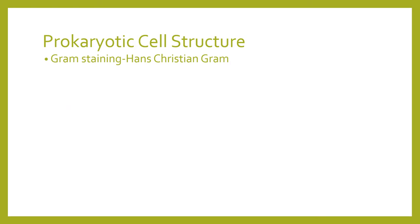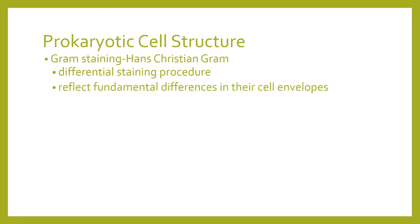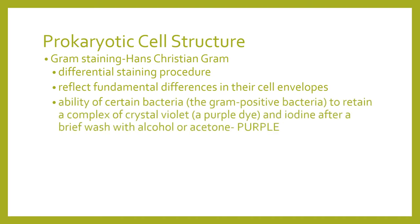There are several ways to identify organisms. One is gram staining, developed by Hans Christian Gram — a differential staining procedure that reflects fundamental differences in the cell envelopes of bacteria. Gram-positive bacteria tend to retain a complex of crystal violet — the purple dye — and iodine after treatment with alcohol or acetone. So gram-positive bacteria will appear purple or blue.